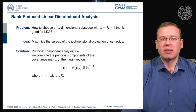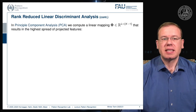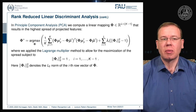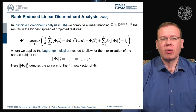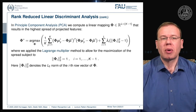We can transform our mean vectors using phi for all of our classes. Principal component analysis is a mapping that computes a linear transform phi resulting in the highest spread of the projected features. This has an objective function where we look for the transform phi-star that is the maximum over a term. This term accounts for the means of our classes y, subtracting the distance to the other means, and taking the two-norm of these transformed matrices.